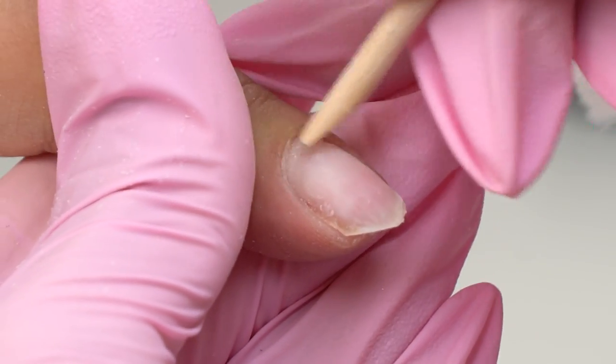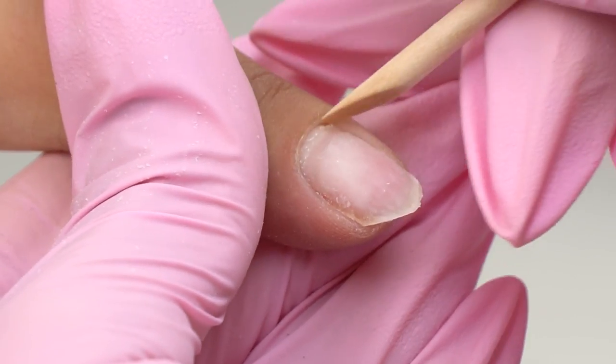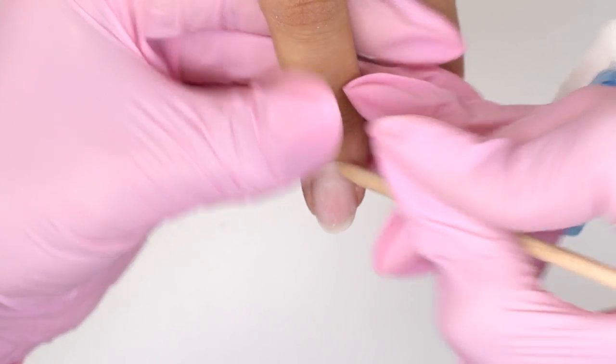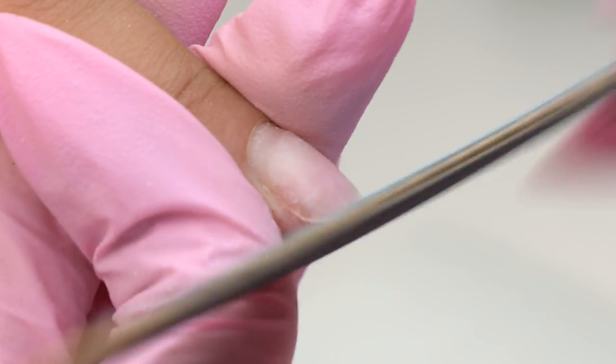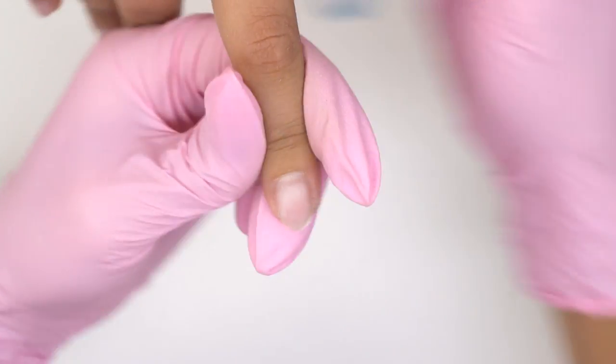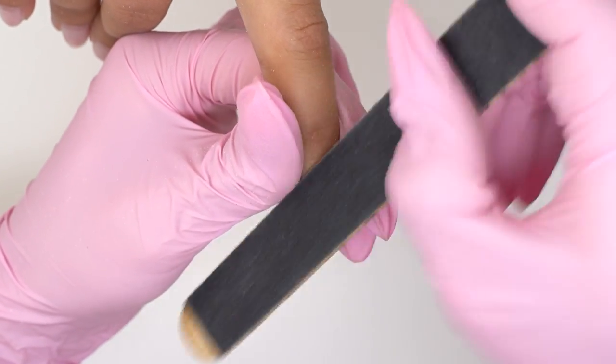We just need to prepare the nail plate first. Remove the free edge completely, otherwise it won't look good. Now, map the surface lifting up nail scales using a 180 grit nail file.